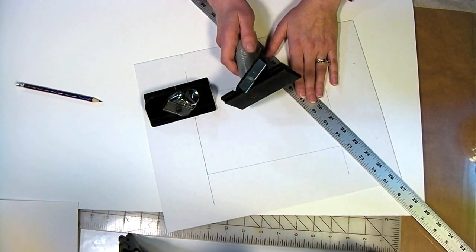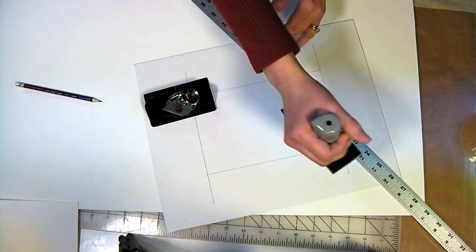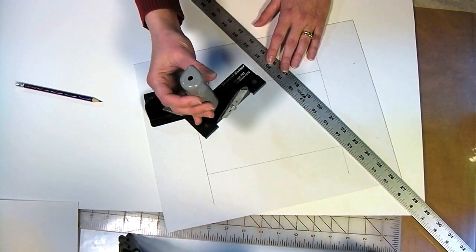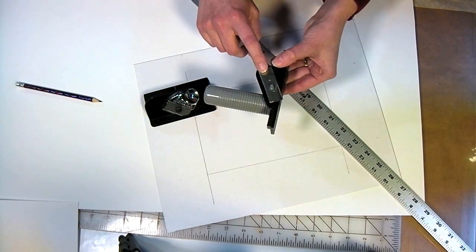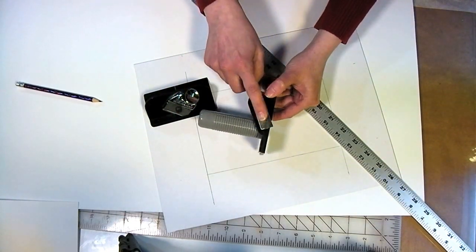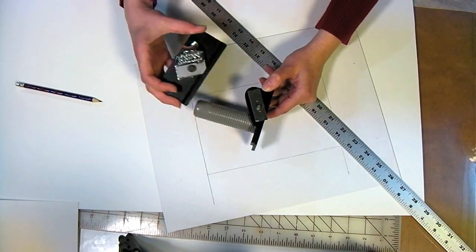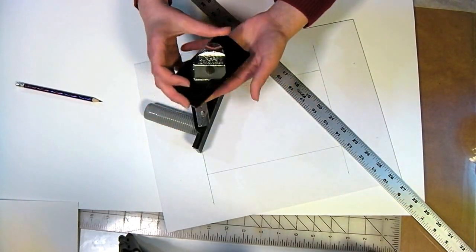You also need a knife that you can make a straight cut with. This is also a pull style cutter that is by Logan. It's a straight cutter, Model 701. I like this because I can adjust the depth for either foam core or for mat board, and it also takes the same blade that my bevel cutter does.